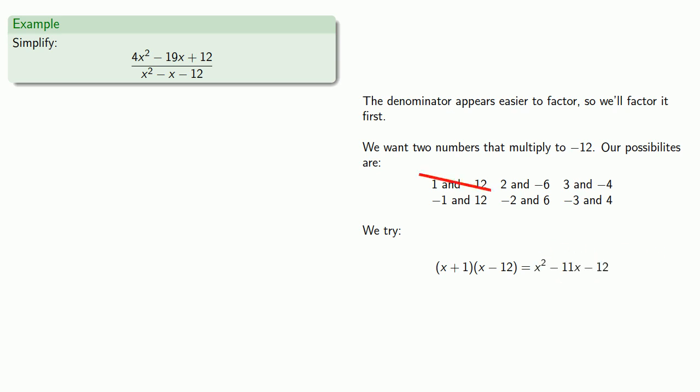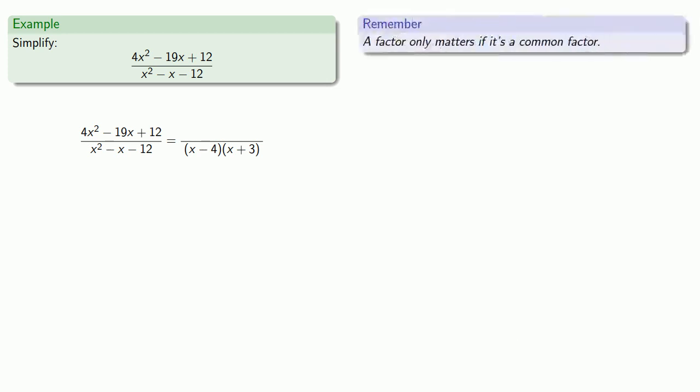Which isn't what we want. We'll try x plus 2 times x minus 6? Nope. x plus 3 times x minus 4? And that's exactly what we want, so our denominator factors. So remember, a factor only matters if it's a common factor. We want to factor the numerator, but just factoring in general isn't really worthwhile unless either x minus 4 or x plus 3 is a factor. So we only need to check if x plus 3 or x minus 4 are factors of the numerator.